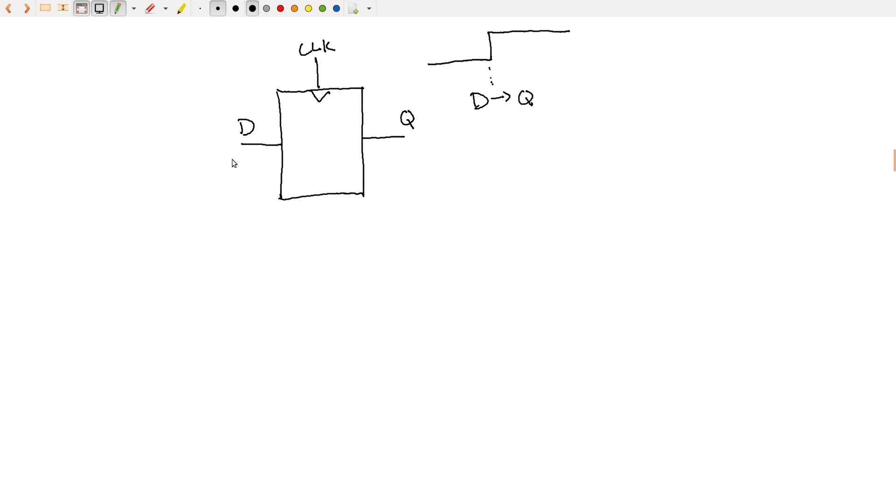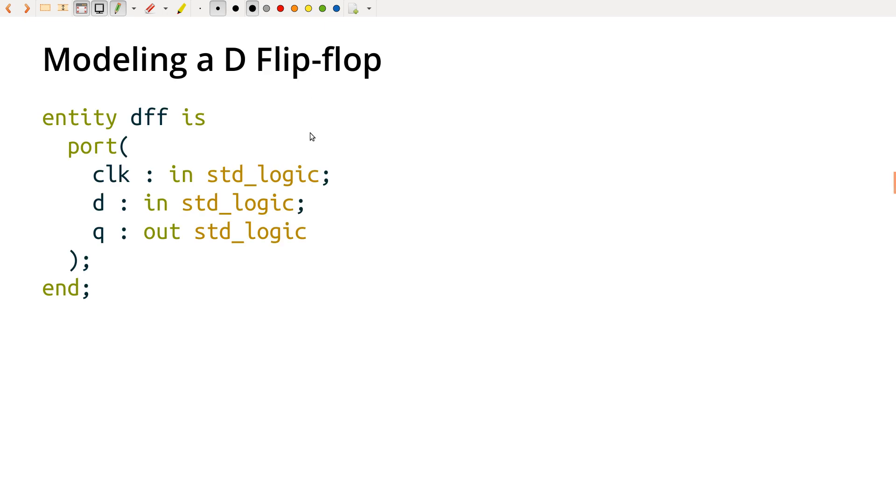Any other time, D can go up or down, and Q is going to maintain its current value. But on that rising edge of the clock, then Q is going to get updated with whatever the current value of D is. Okay, so that's the behavior of the flip-flop, let's see if we can implement this in VHDL.